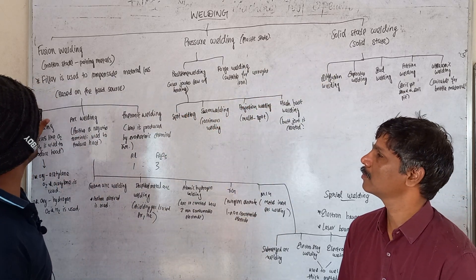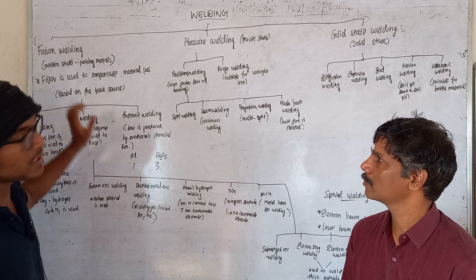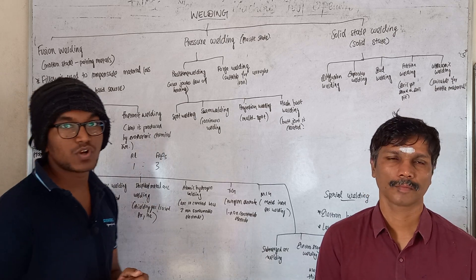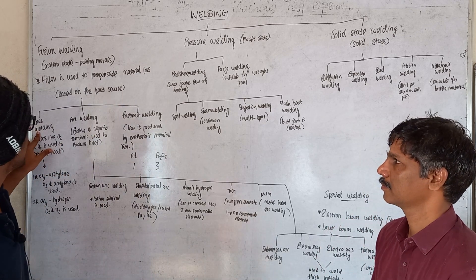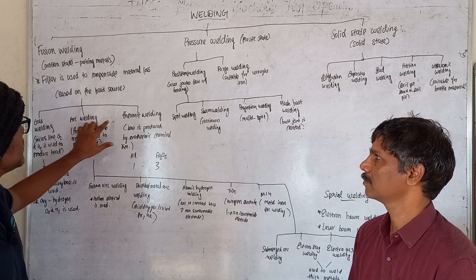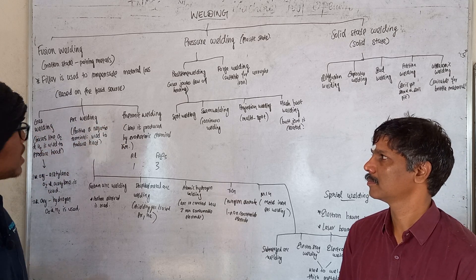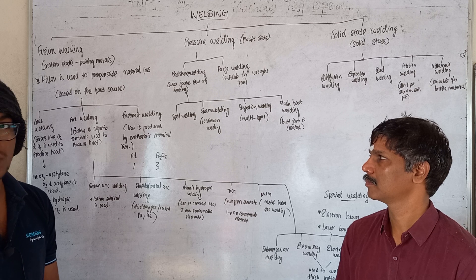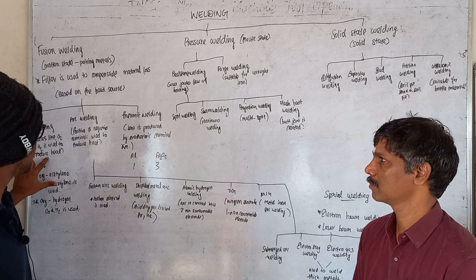Fusion welding is classified into three types based on the heat source: gas welding, arc welding, and thermite welding. For gas welding, we heat using oxygen and hydrogen fuel — or oxyacetylene. The oxygen and fuel gas are mixed to produce a hot flame source.